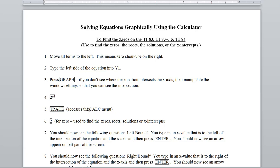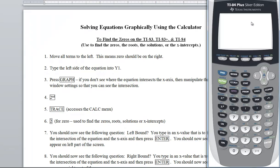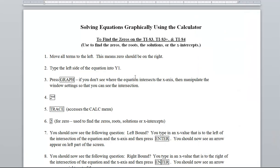Type the left side of the equation into y1. So in your calculator we're going to type in the equation. Press graph. When you press graph, if you don't see where the equation intersects the x-axis, then manipulate the window settings so that you can see the intersection. We are concerned about the x-axis.